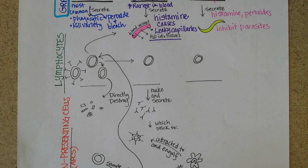So this is part two of types of white blood cells. We've gone over granulocytes and now we're going to talk about lymphocytes.